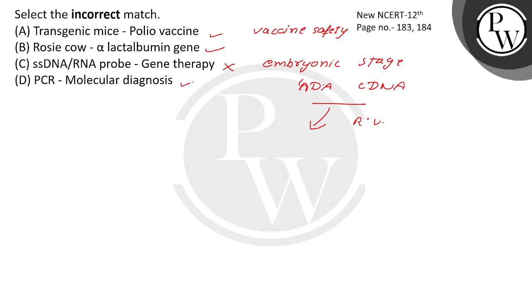PCR for molecular diagnosis — PCR, polymerase chain reaction, works like a photocopy machine. Some diseases can be diagnosed at an early stage. Using PCR, you can multiply nucleic acid from bacterial or viral infections and detect them, even before symptoms appear. So this is a correct option, making it not the incorrect answer.